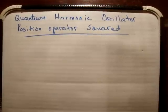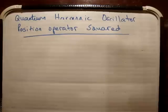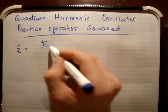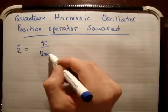In this video I'd like to calculate the position operator to be squared. So in previous videos I showed you the following. I showed you that the position operator x is equal to the square root of h bar over 2m omega